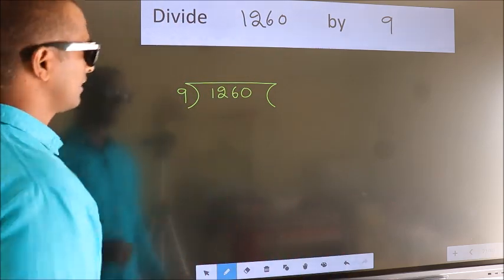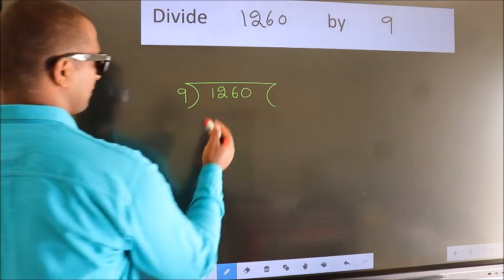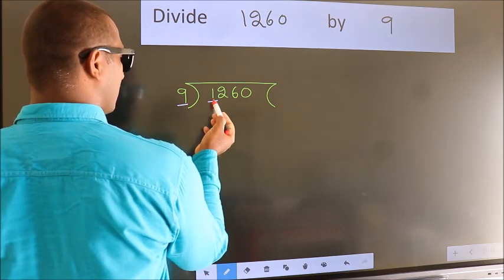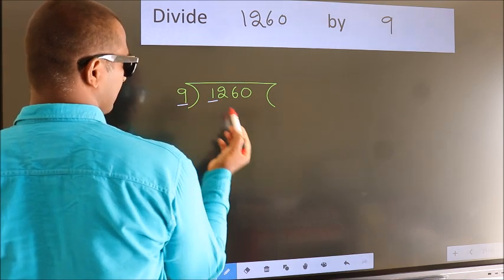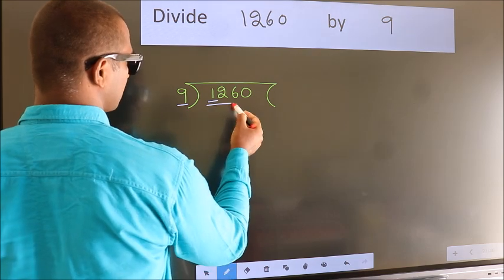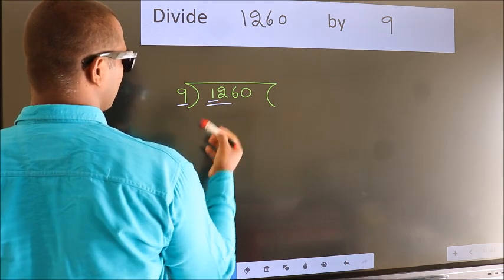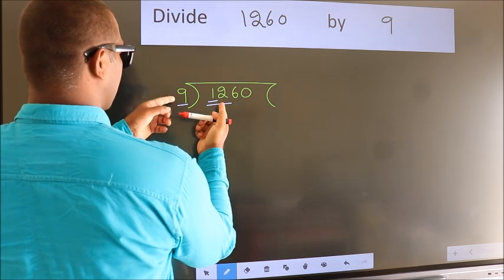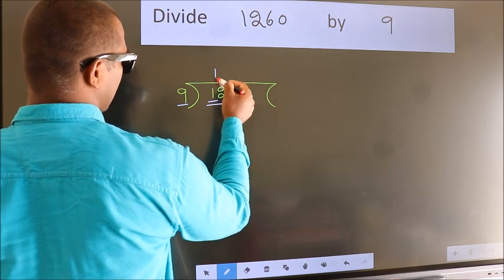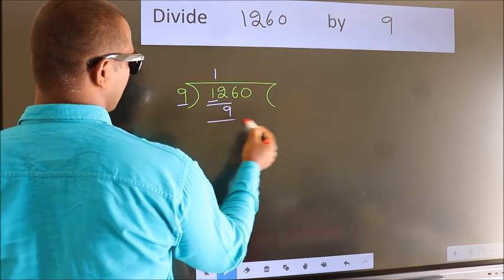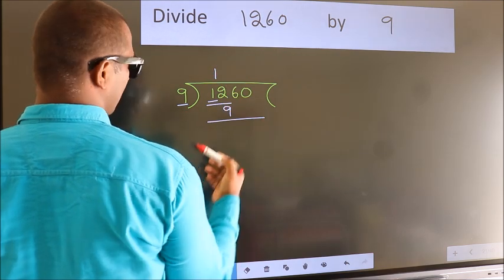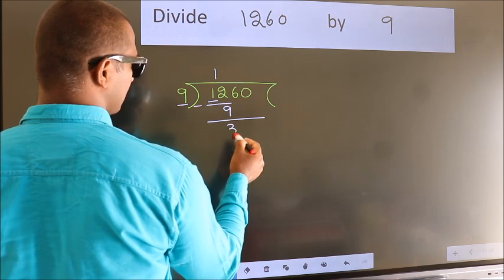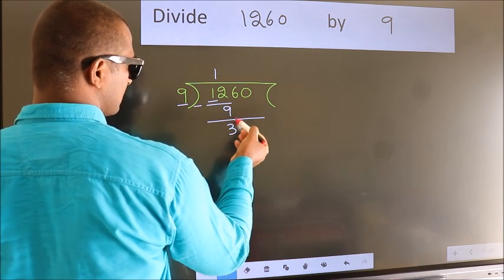Next, here we have 1, here 9. 1 is smaller than 9, so we should take 2 numbers: 12. A number close to 12 in the 9 times table is 9 — 9 once is 9. Now we should subtract. We get 3.